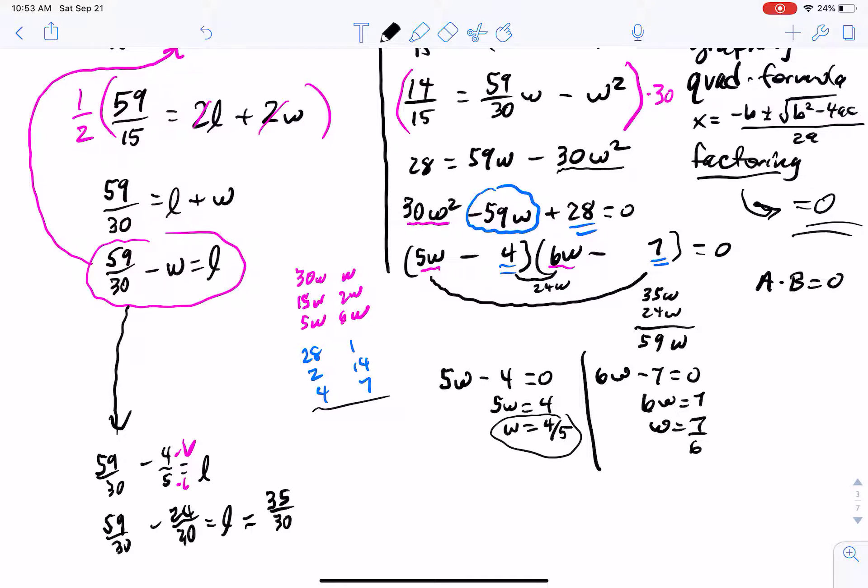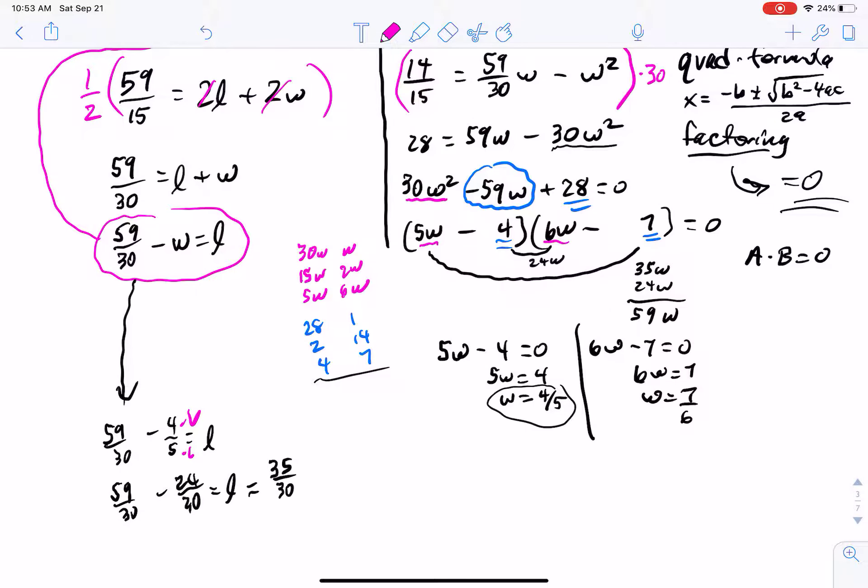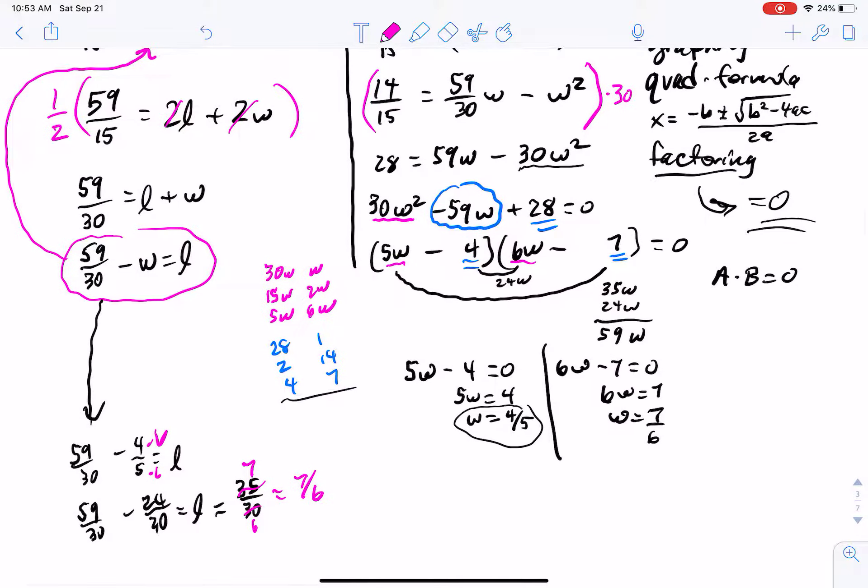When I subtract that, I think that I get 35 over 30, which reduces because we've got a common factor on the top and the bottom. When I divide out my common factor of 5, up top I'd have 7. And on the bottom I'd have 6. Wait a minute, that number looks familiar. Notice that that's the other one that's right here. That's pretty interesting. So, if these things work out, then that means that my width is 4 fifths, my length is 7 sixths, or if I switch those things around, it still works out.